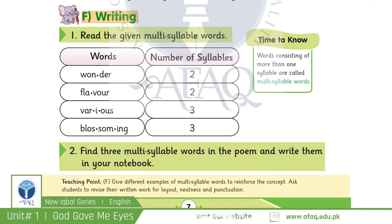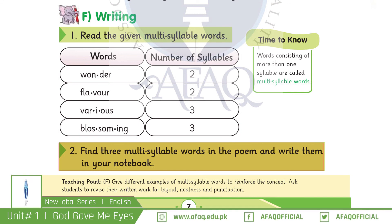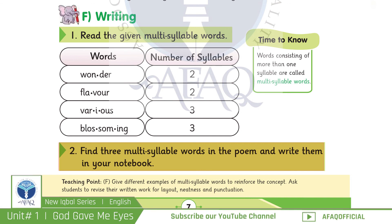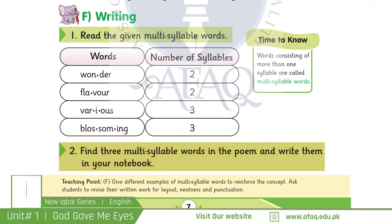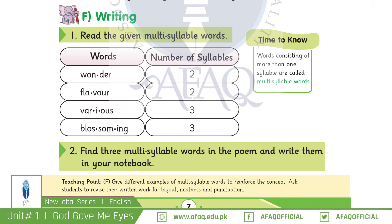Now we will work with writing on page number 7. آج ہم multi-syllable words کے بارے میں بات کریں گے۔ ایسے words جن میں ایک سے زیادہ syllables ہوں، multi-syllable words کہلاتے ہیں۔ آج کا ہمارا task ہے: Find 3 multi-syllable words in the poem and write them in your notebook. آج کے lesson میں ہم نے comprehension، grammar، listening and speaking اور writing سیکھی۔ Hopefully آپ نے آج کا lesson enjoy کیا ہوگا — اگلے lesson میں پھر ملتے ہیں، Allah Hafiz۔